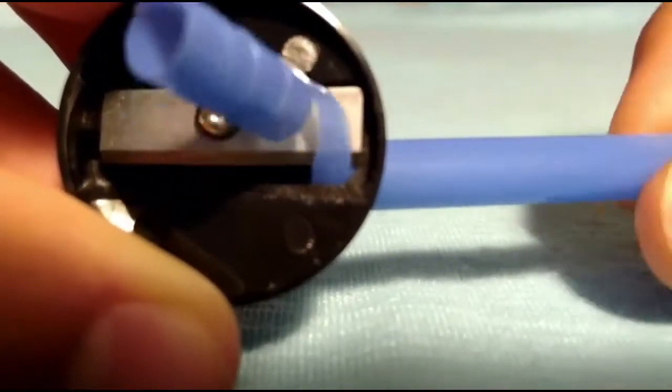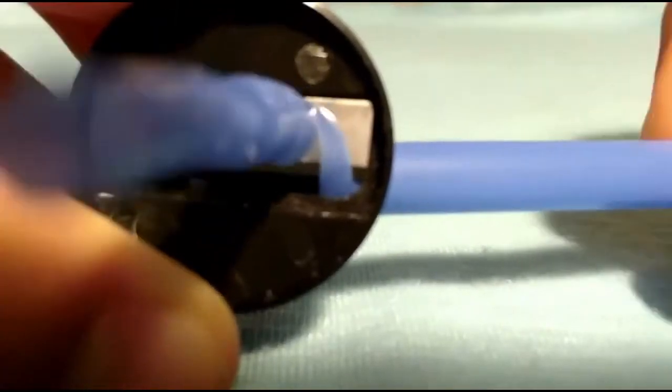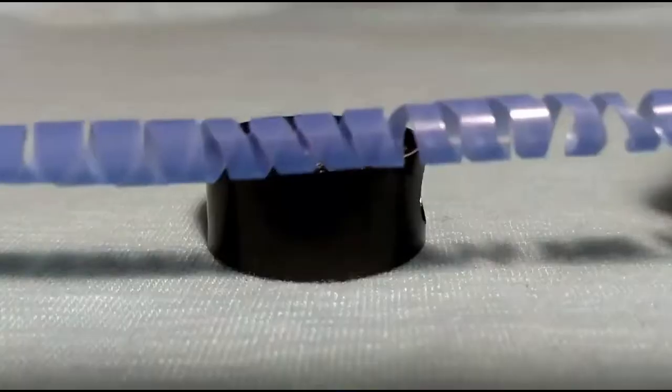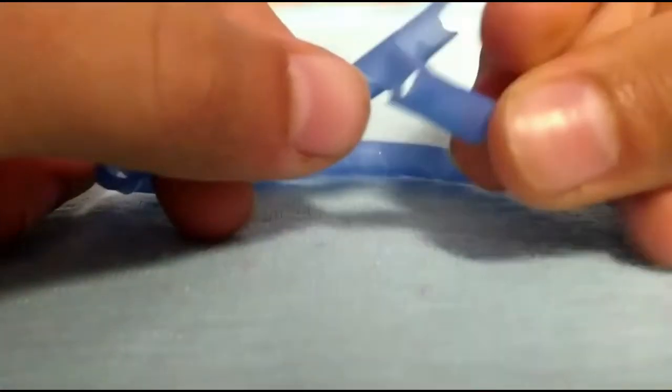You can literally make a bracelet in 30 seconds doing this. It's also a really good last-minute gift. You can use whatever color you want. It's super cool and the way you want to tie this is just by getting the two ends and twisting them together.